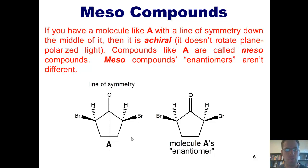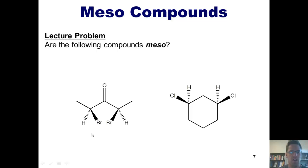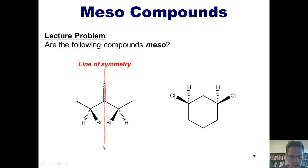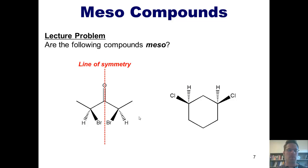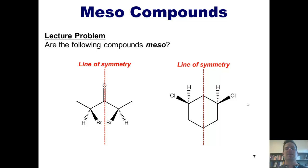Let's test your knowledge by looking at a few more examples. Are the following compounds meso? Looking at the molecule to the left, we can see that if we draw a line of symmetry directly down the middle of it, everything on the left side of that line looks like the mirror image of everything on the right side. Thus, if you were to draw this molecule's enantiomer, it would actually look exactly like the original molecule itself — this compound is absolutely meso, and hence achiral. It would not rotate plane-polarized light. By similar argument, the molecule to the right also has a line of symmetry going right down the middle of it — it is a meso compound, achiral, and would not rotate plane-polarized light.